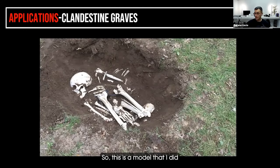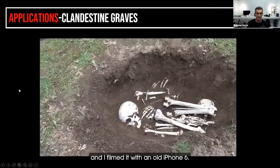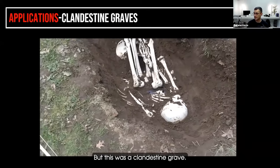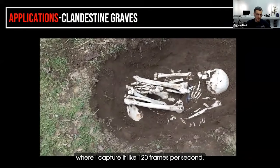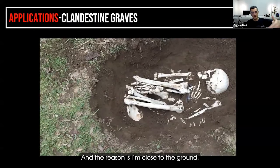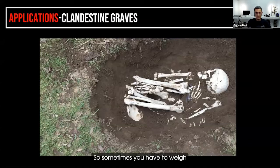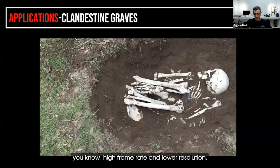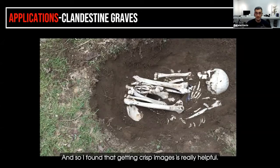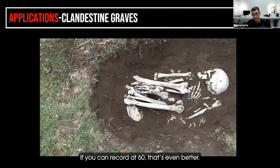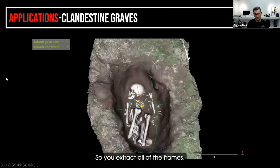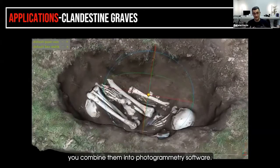Clandestine graves — this is a model I did, filmed with an old iPhone 6. I'm just walking around using the high-speed slow-motion capture at 120 frames a second. The reason is I'm close to the ground, so if I use 30 frames per second and there's any jerkiness, I'll get blurring. You have to weigh the balance between high resolution at a lower frame rate versus high frame rate at lower resolution. Getting crisp images is really helpful, so 4K at 30fps is okay, 60fps is even better, and this can turn into a nice 3D model.